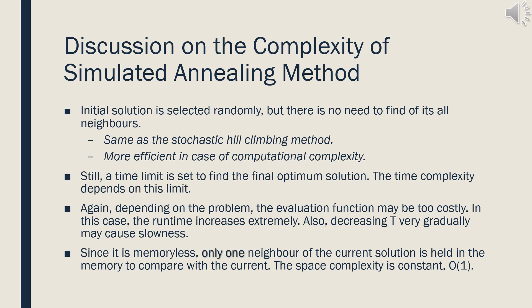Same as the stochastic hill climbing method, the initial solution is selected randomly and there is no need to evaluate all neighbors. That's why simulated annealing is more efficient in computational complexity than steepest ascent hill climbing. Still, a time limit is set to find the final optimum solution, and the time complexity depends on this limit. The evaluation function may be too costly depending on the problem, and decreasing T very gradually may cause slowness. Since it is memoryless, only one neighbor of the current solution is held in memory. The space complexity is constant.